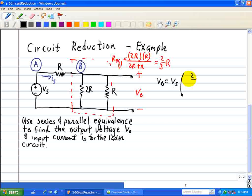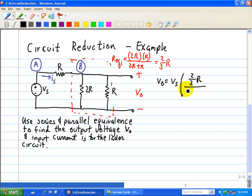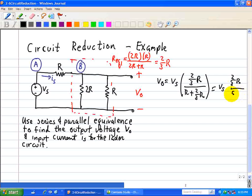So two-thirds R divided by R plus, since this is in series with this R, two-thirds R, which is equal to Vs, two-thirds R is in the numerator, and five-thirds R is in the denominator, and that yields two-fifths Vs for V0.